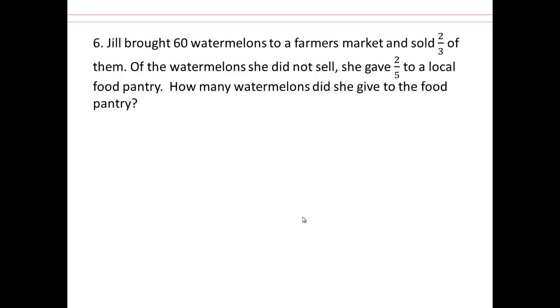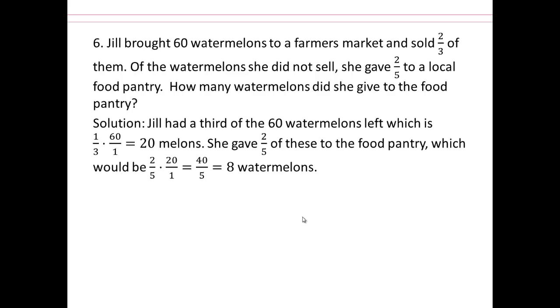See if you can figure out how to do this problem. Jill brought 60 watermelons to a farmer's market and sold 2 thirds of them. So of the watermelons that she did not sell, she gave 2 fifths to a local food pantry. How many watermelons did she give to the food pantry? So let's start at the beginning. We have 60 watermelons of which you sold 2 thirds of them, which means you are left with 1 third of 60. 1 third of 60 would be 1 third times 60. This is where multiplication of fractions come into play. You can see a practical example. So there are 20 watermelons left.